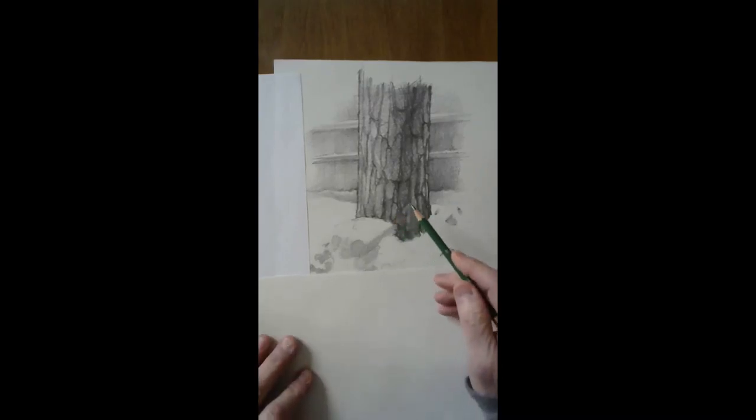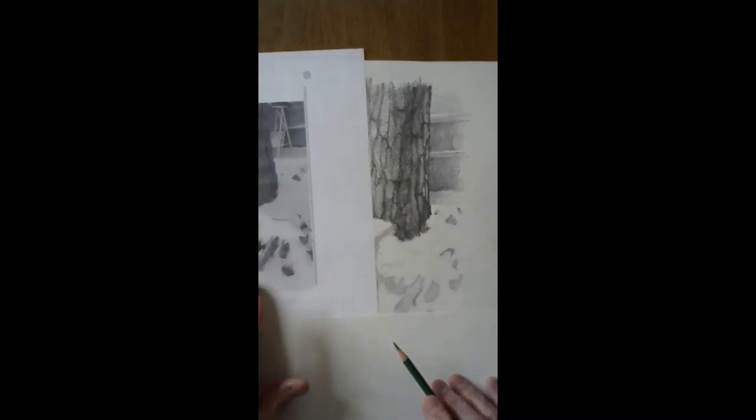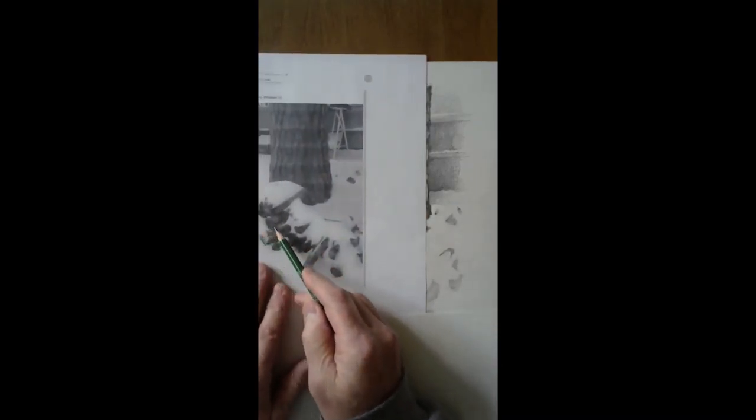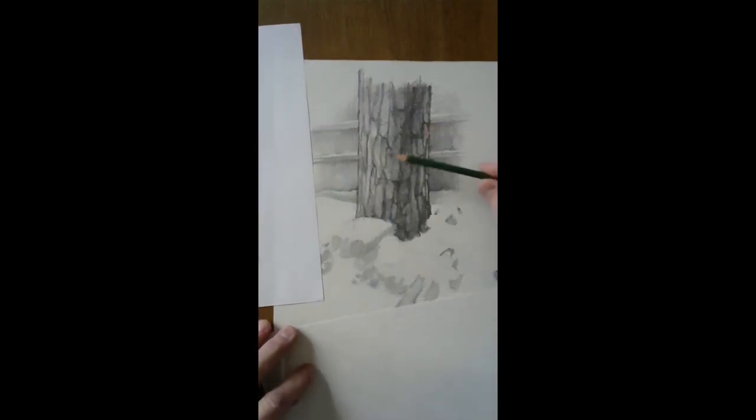Now for the most part the tree is done, and what I'm going to do is work on these logs in the foreground and darken those up. You can see how that contrast, the light and the dark, really pull out the snow and the tree bark.